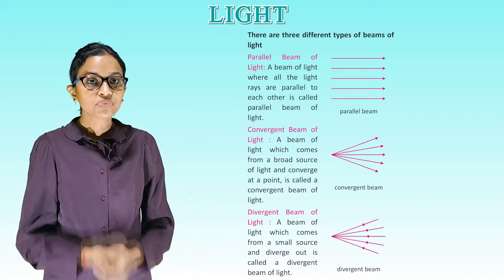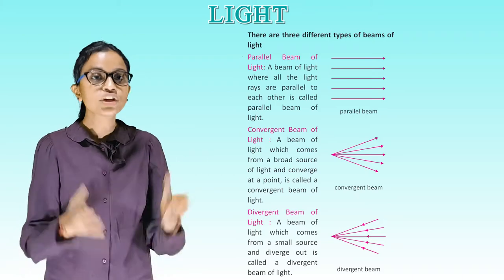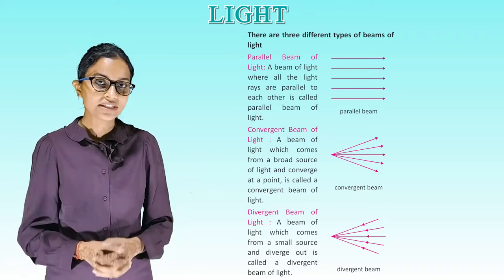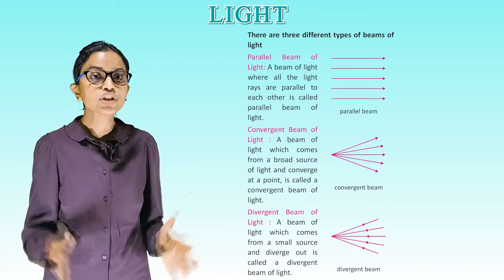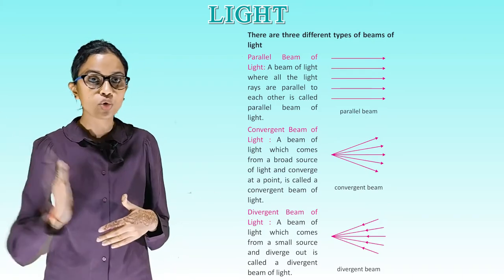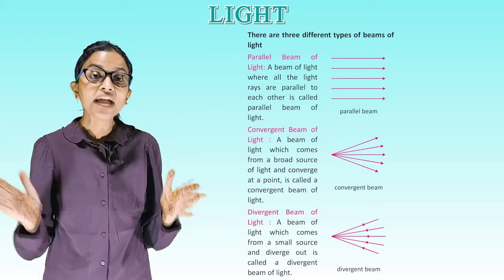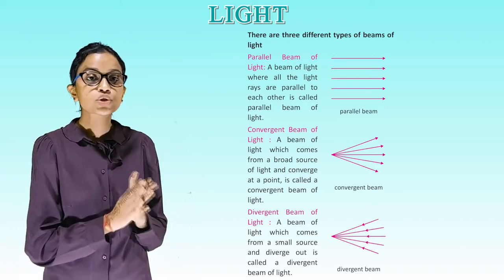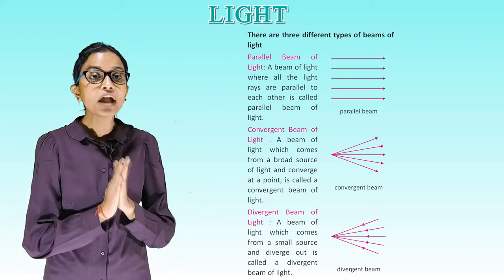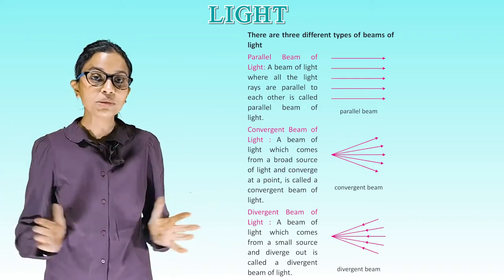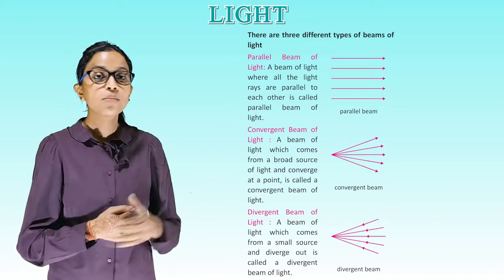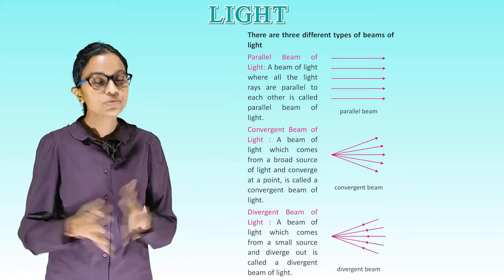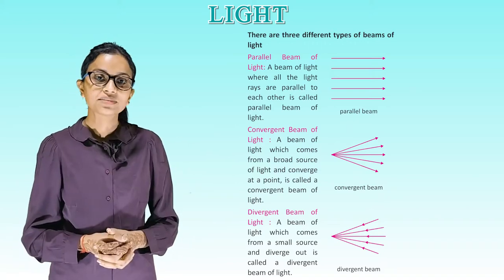Divergent beam of light: a beam of light which comes from a small source and diverges out is called a divergent beam of light. This is the diagram of a divergent beam of light.